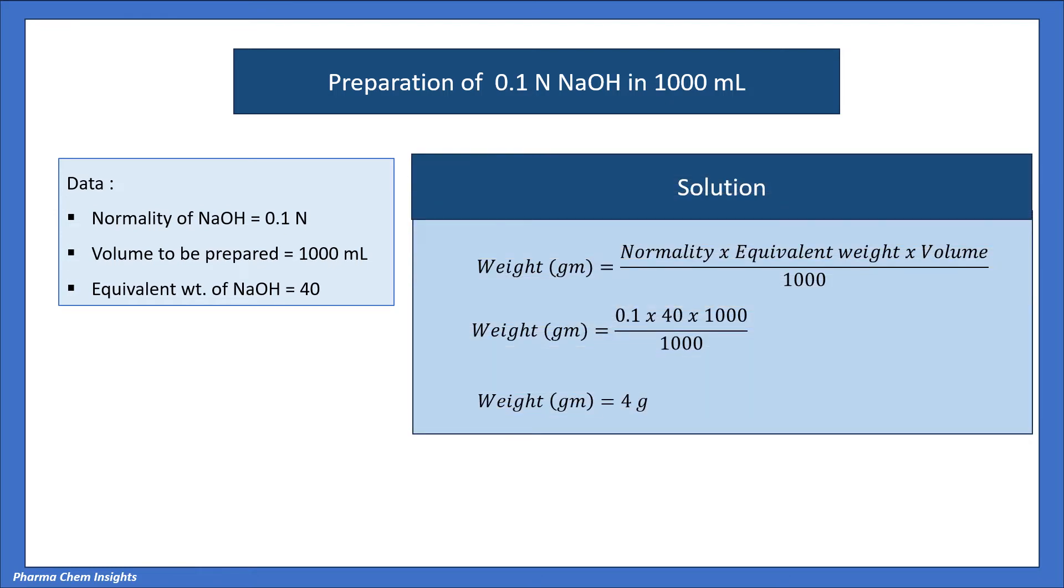So this is the solution. So putting normality formula that is weight in gram is equal to normality into equivalent weight into volume divided by 1000. So by putting the values, normality is 0.1 equivalent weight is 40 into volume to be prepared is 1000 divided by 1000 gives 4 grams. Hence 4 grams of NaOH dissolved in 1000 ml of water gives 0.1 normal NaOH solution.